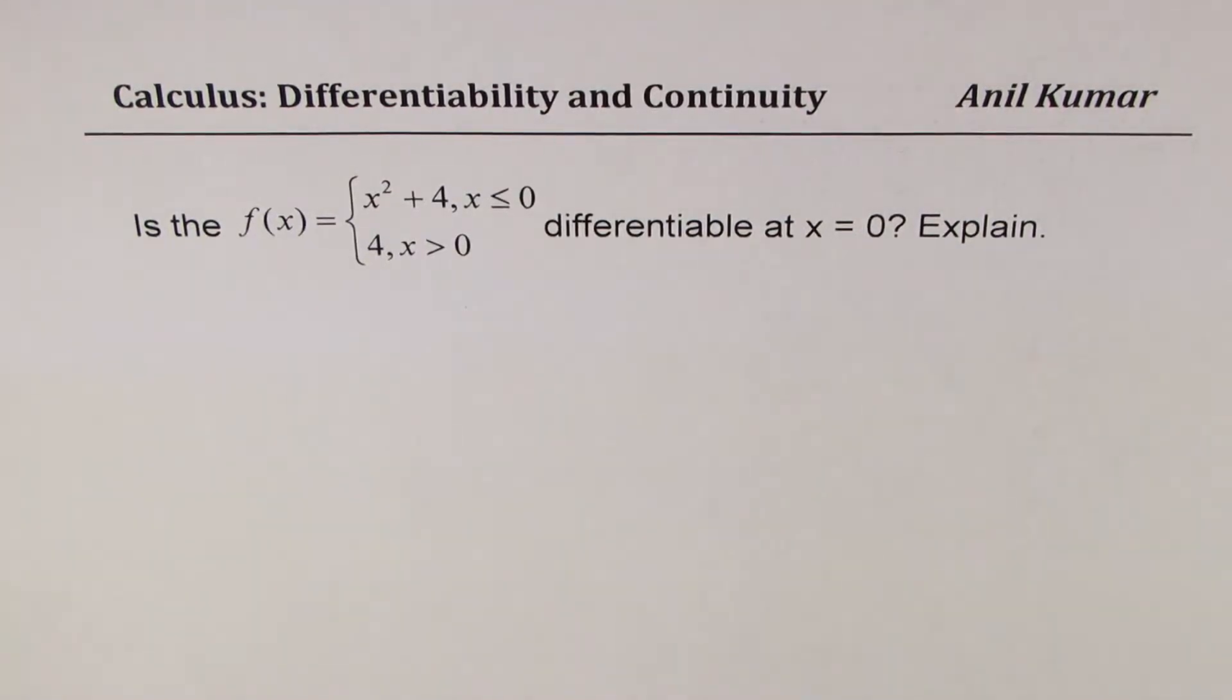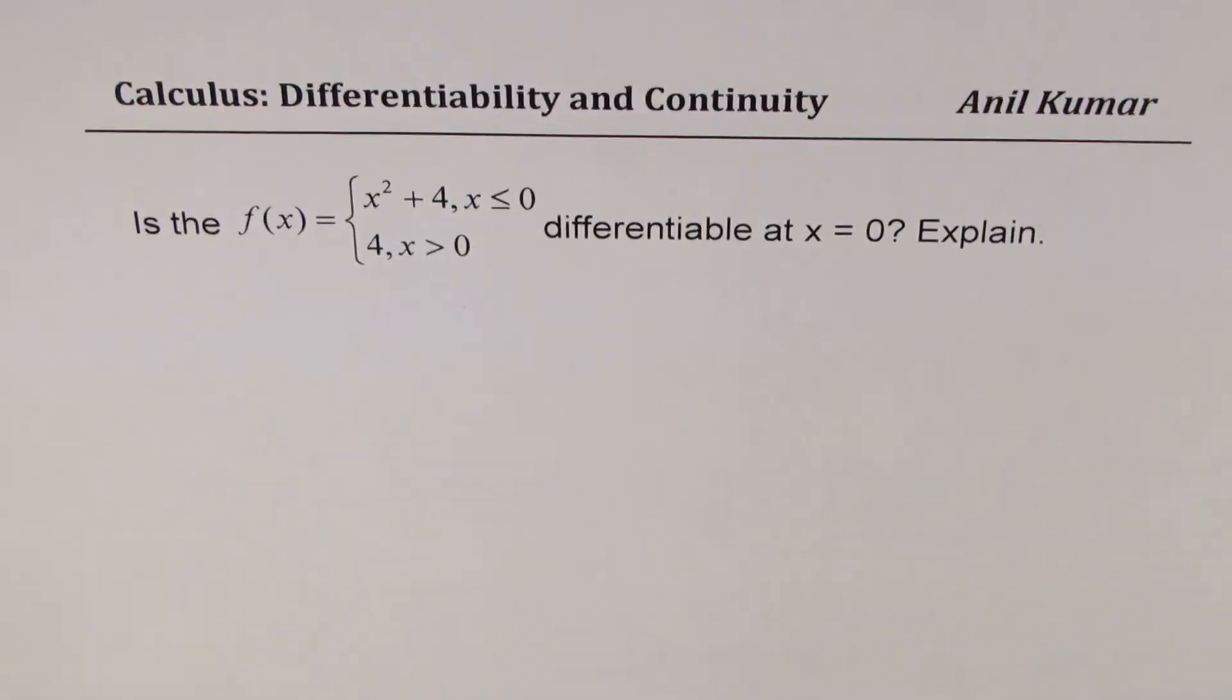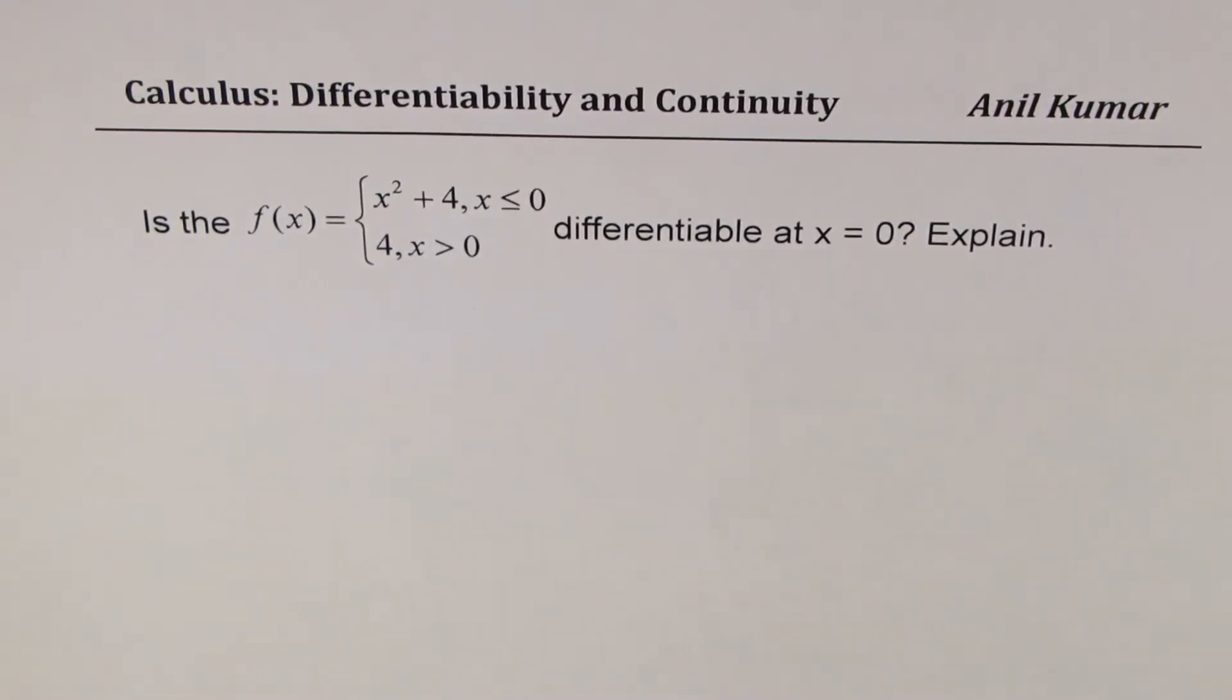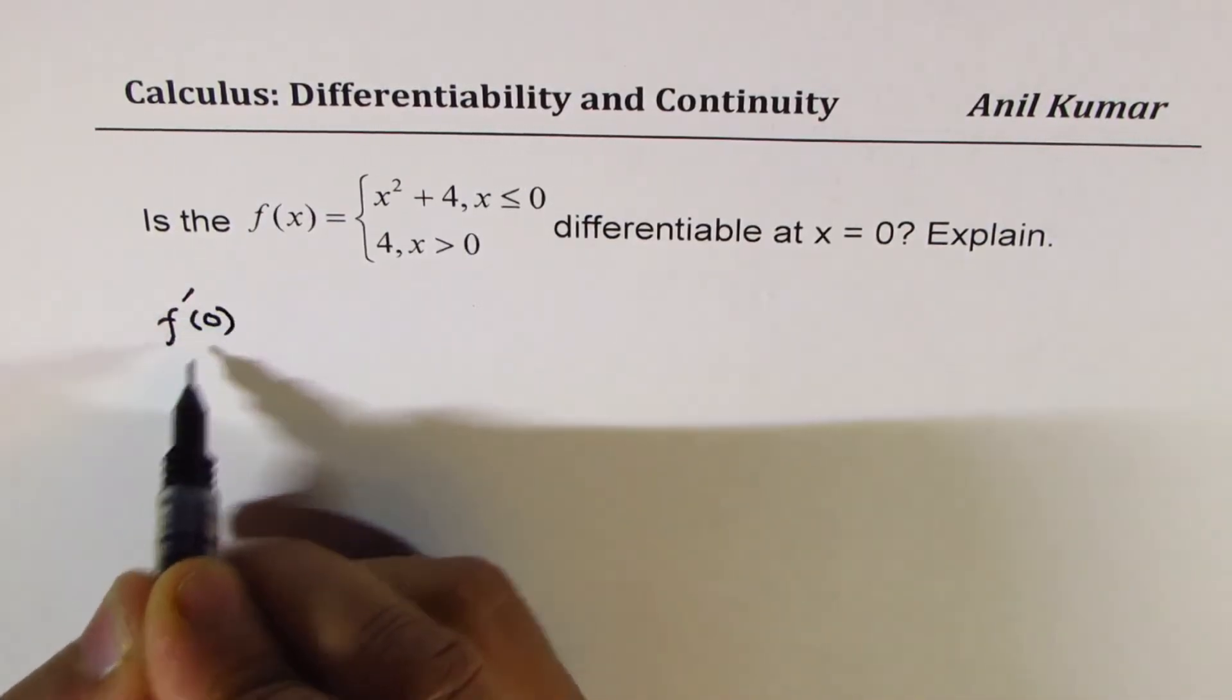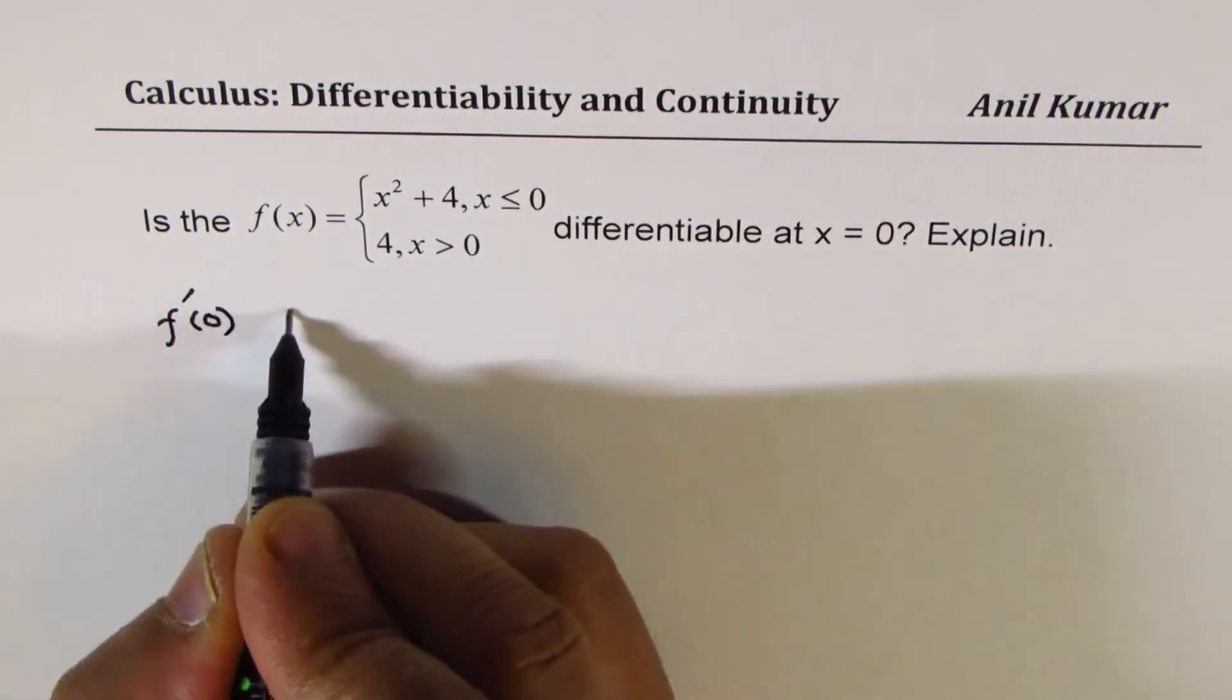It means what? It really means that we should have a valid value of the derivative of the function at 0. So that means f'(0) should exist.